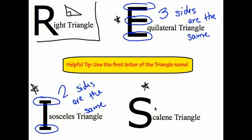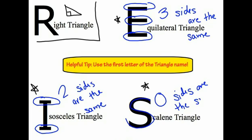And finally, looking at the S for the scalene triangle — there are no lines in that S, it's curved. So since there are no lines, zero sides are the same in a scalene triangle. This is a helpful hint you can use when trying to distinguish between an equilateral, an isosceles, and a scalene: think about the first letter of each triangle and the number of lines in those letters.